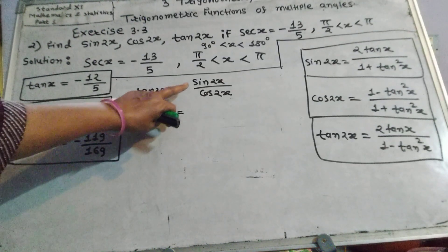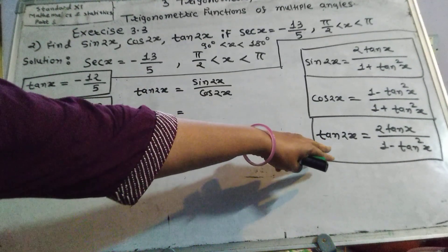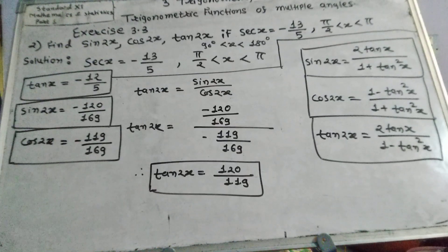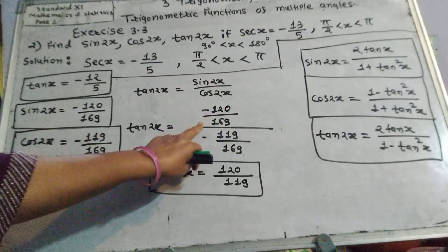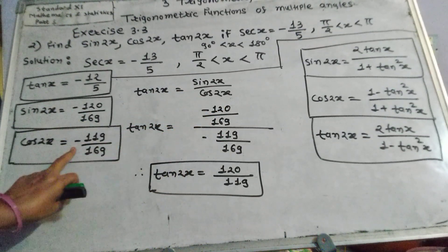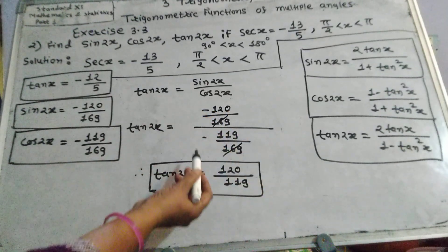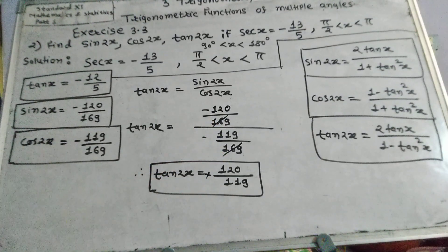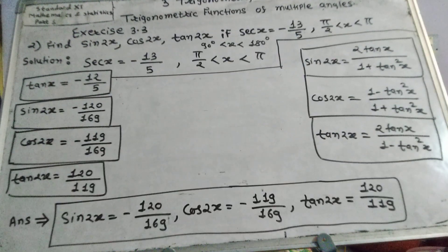Now tan 2x equals sin 2x divided by cos 2x. We can use this formula, or alternatively tan 2x equals 2 tan x divided by 1 minus tan²x. Using sin 2x over cos 2x: sin 2x is negative 120 upon 169 and cos 2x is negative 119 divided by 169. The 169s cancel, and negative divided by negative becomes positive. Therefore tan 2x equals 120 divided by 119.